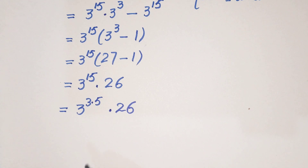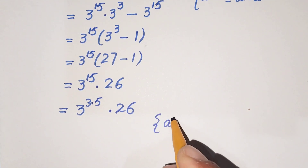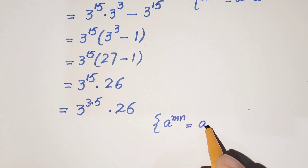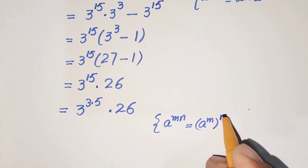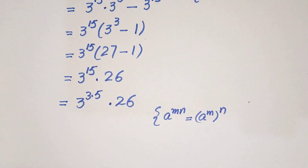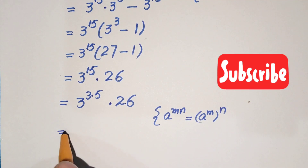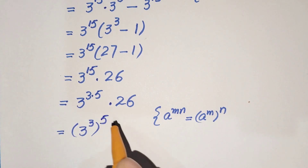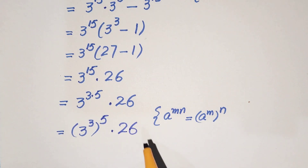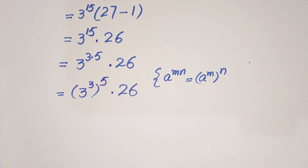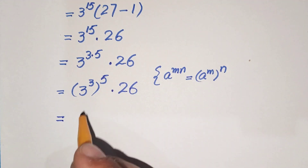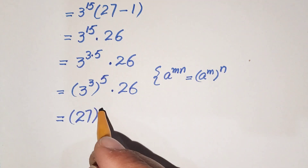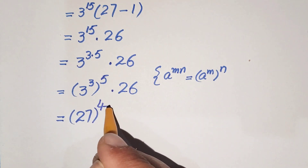By the exponential law, if we have a raised to the power m times n, we can write it as a raised to the power m, whole raised to the power n. Using this formula, we get 3 raised to the power 3, whole raised to the power 5, times 26. Now 3 raised to the power 3 equals 27, so this is 27 to the power 5, and we can write 5 as 4 plus 1.